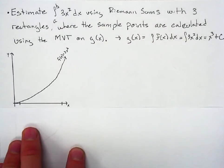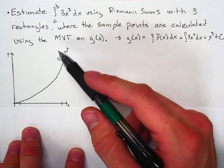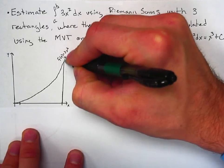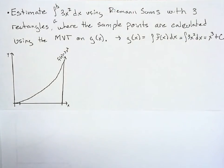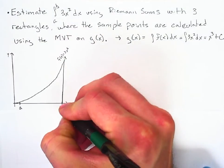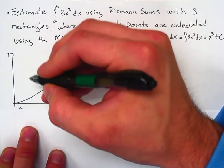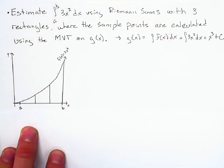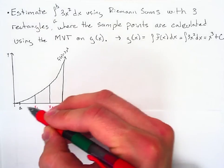Just like most other problems, here's f of x — 3x squared — that we're going to be finding the area underneath. We're going to find our interval and call the endpoints a and b. Then we split that interval into three even parts, labeling the intermediate points x sub 1 and x sub 2, with a and b already labeled at the ends.